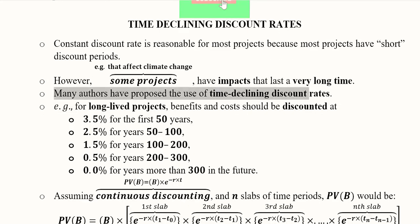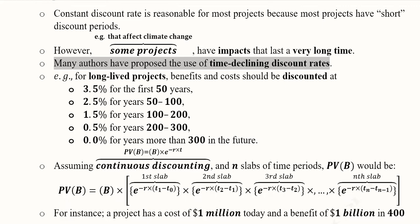We will see in this numerical how this can happen. Many authors have proposed the use of time declining discount rates. So following these authors who have suggested this, it's a long-lived project and we have benefits and costs. They are discounted at 3.5% for the first 50 years.